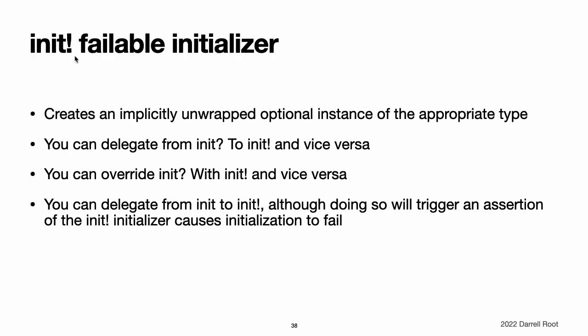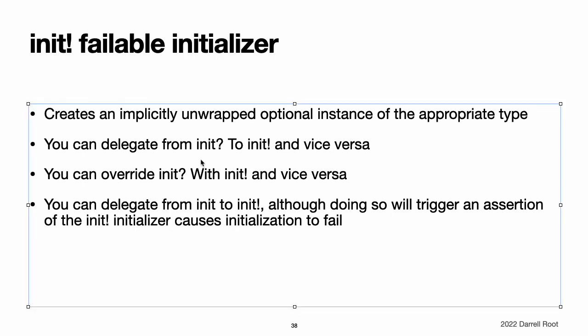The implicitly unwrapped failable initializer. You typically define a failable initializer that creates an optional instance of the appropriate type by placing a question mark after the init keyword. Alternatively, you can define a failable initializer that creates an implicitly unwrapped optional instance of the appropriate type. Do this by placing an exclamation mark after the init keyword instead of a question mark. You can delegate between failable initializers and implicitly unwrapped failable initializers, and you can override failable initializers with implicitly unwrapped failable initializers and vice versa.